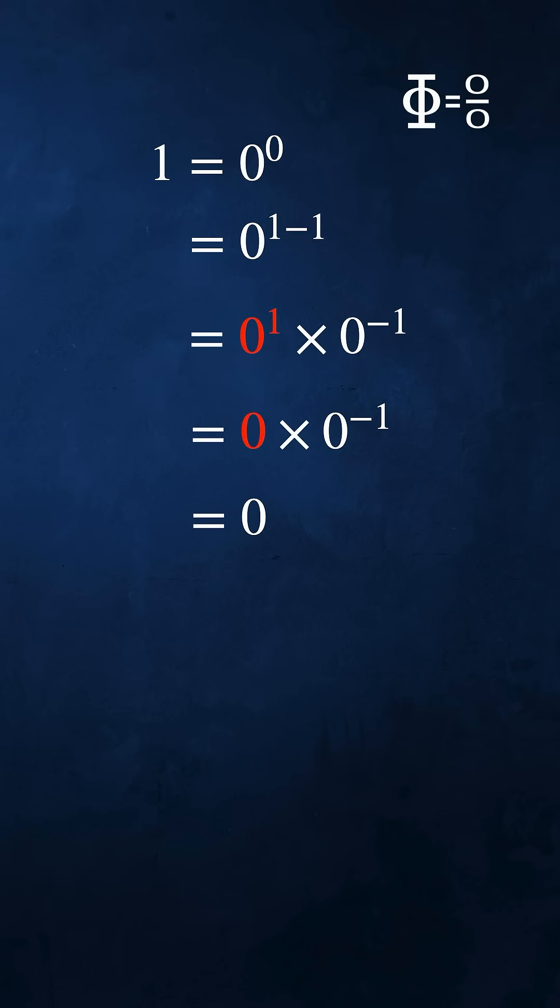we let 0 to the power 1 equal 0. Assume that 0 to the power minus 1 is some kind of number. Then 0 times any number equals 0 and we get the contradiction 1 equals 0. But look at the right hand side. We've correctly calculated 0 to the power 0 equals 0.